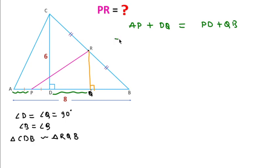If we add AP + DQ to both sides, then we get AP + DQ equal to PD + QB + AP + DQ.